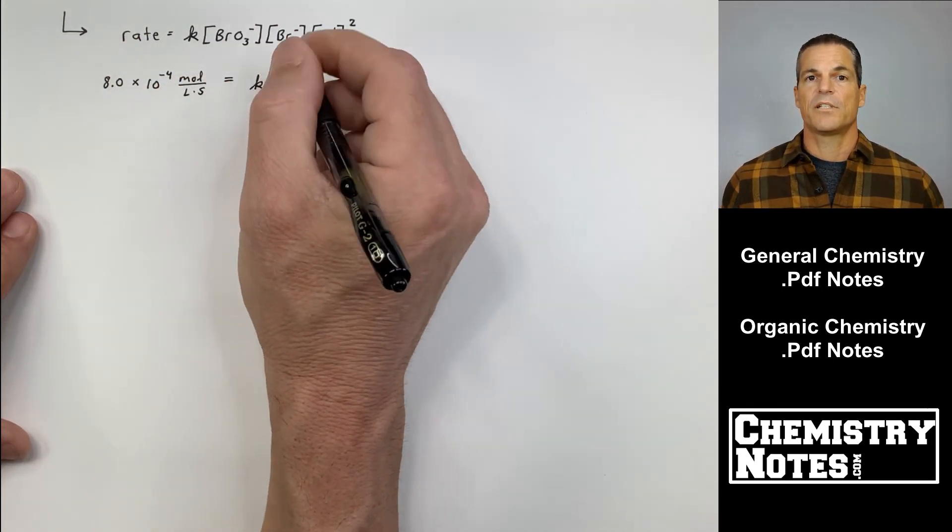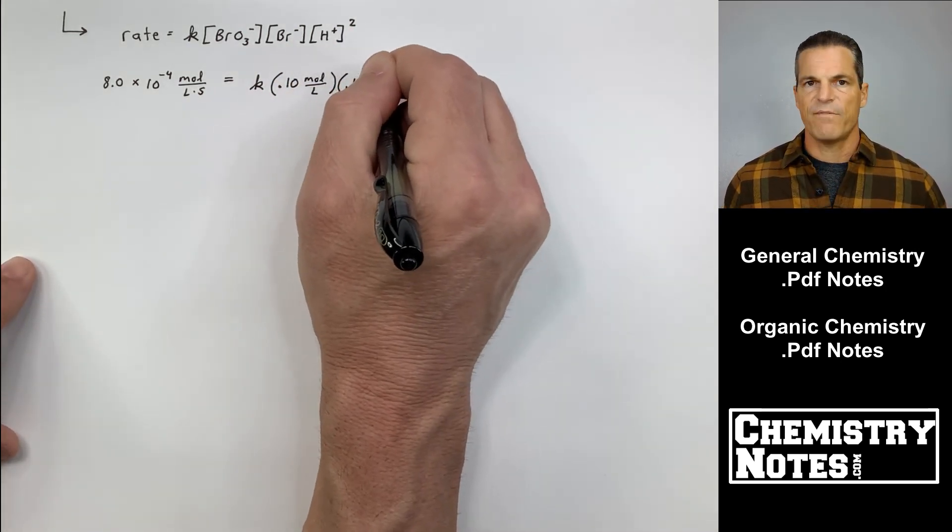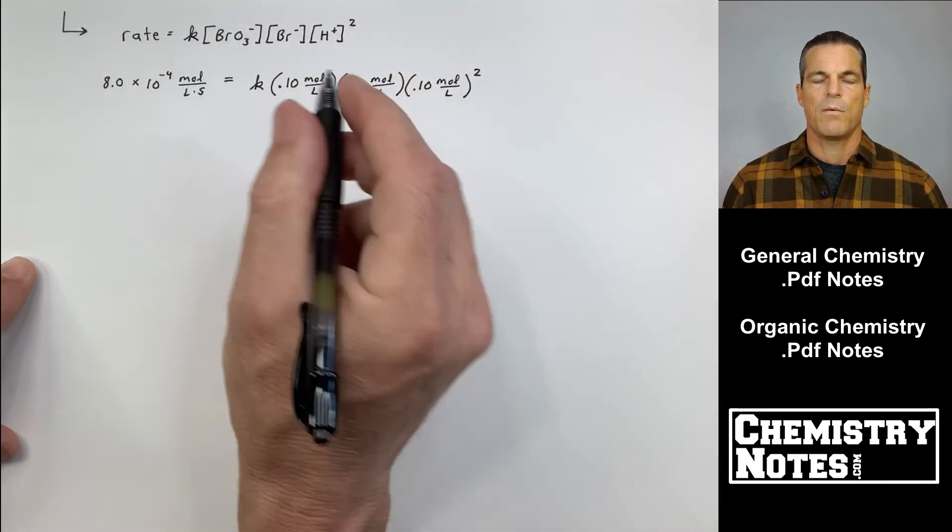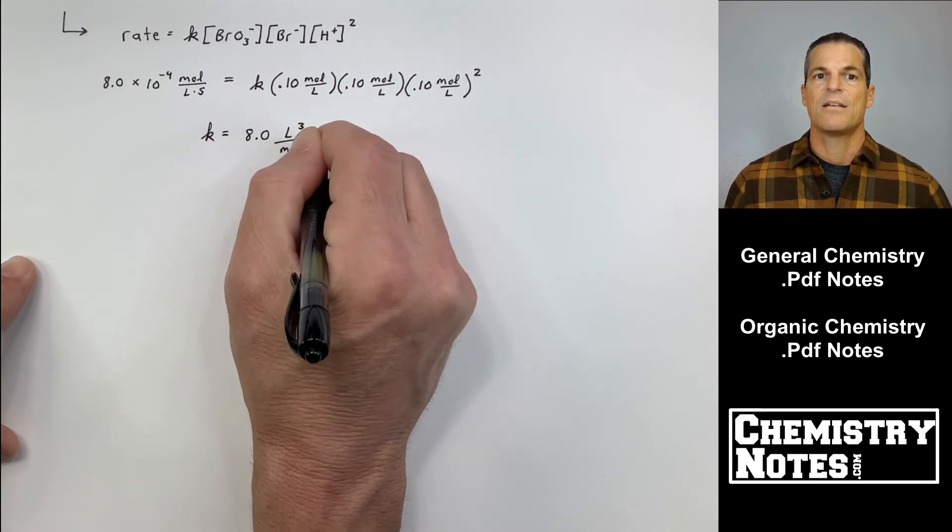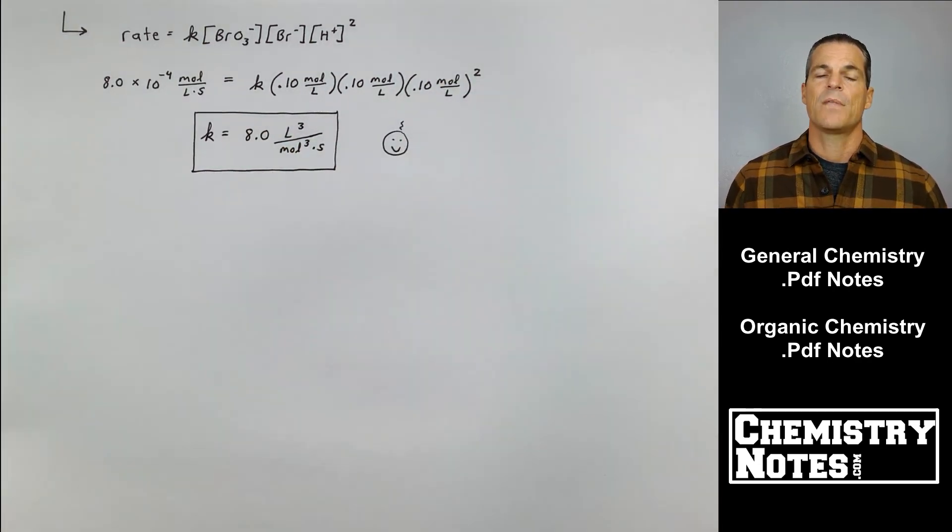Arbitrarily pick one of those experiments. You have experiment 1, 2, 3, or 4. Choosing any of them gets you to the same value of the rate constant. I chose experiment 1. I always just choose the first experiment for this. If I plug things into my rate law, plug them into my rate equals K times Bromate times Bromide times H+ ion, I get a K value of 8.0 liters cubed all over mole cubed times seconds. Those are different units than the K we found a few pages back.